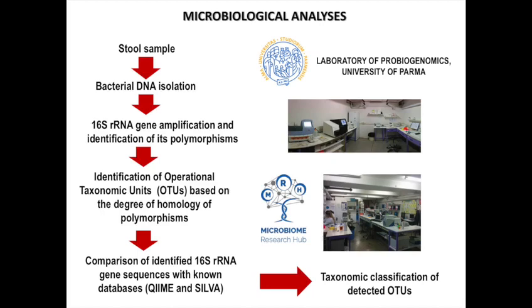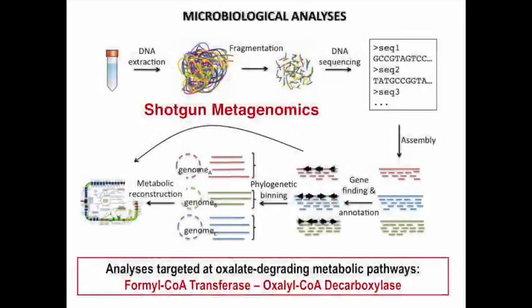We performed 16S sequencing for all subjects, and also shotgun metagenomics for 5 stone formers and 5 controls. This was targeted at oxalate-degrading metabolic pathways.